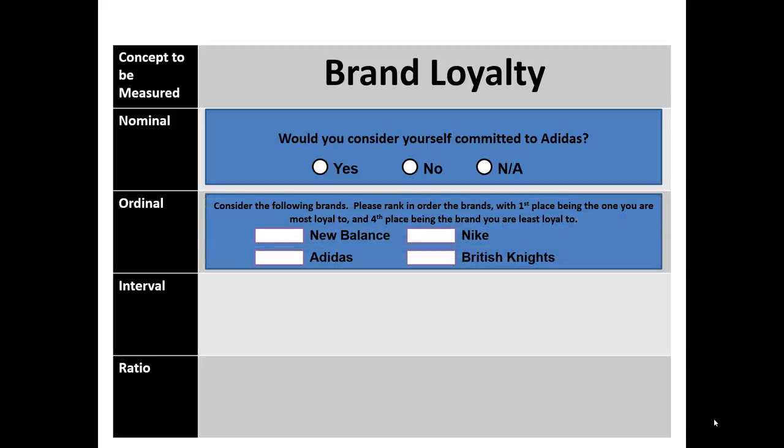If we wanted to add some order to it, perhaps we presented the brand Adidas in context of some competitors — Nike, New Balance, and British Knights. Consider the following brands: please rank and order the brands with first place being the one you are most loyal to and fourth place being the brand you are least loyal to. Now, if someone said second for Adidas, we would know that it's their second most favorite brand, but we wouldn't know if it's razor-sharp close to their first most favorite brand, or if Nike is a far distant first and Adidas is close to New Balance and British Knights.